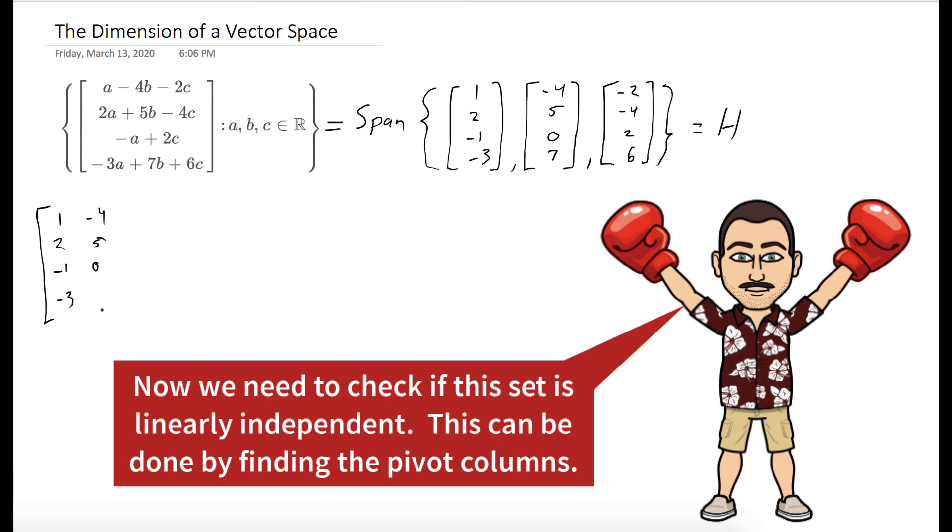To check for linear independence, what we're going to do is take our vectors and form a matrix out of them. And we'll row reduce so we could find the pivot columns. And the pivot columns will form a basis for our subspace.